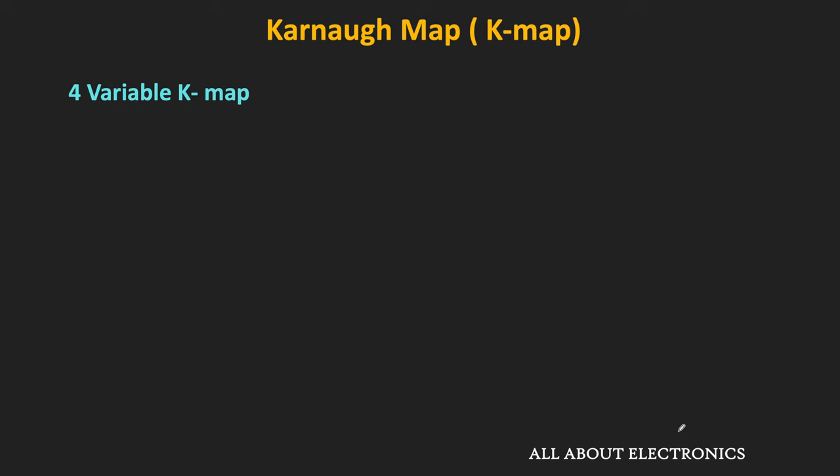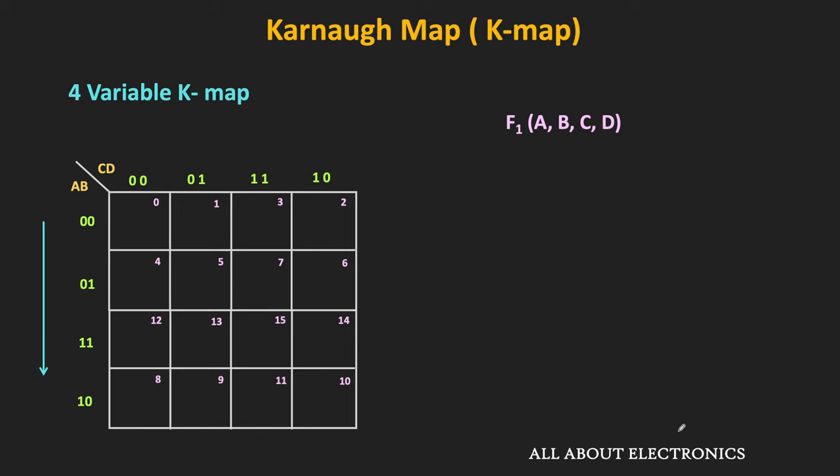First of all, let us see the construction of this 4-variable kmap. Let's say a, b, c, d are the 4 variables of this function, where a is the MSB and d is the LSB. This is one way to construct the 4-variable kmap. The binary number beside each row represents the possible values of variables a and b, while the binary numbers at the top of each column represent the possible values of variables c and d.